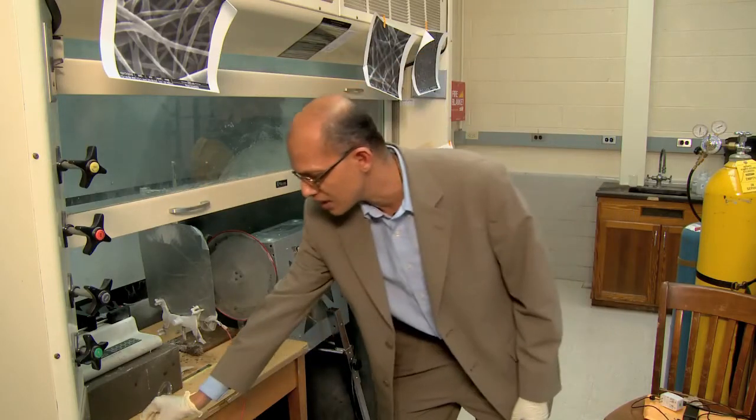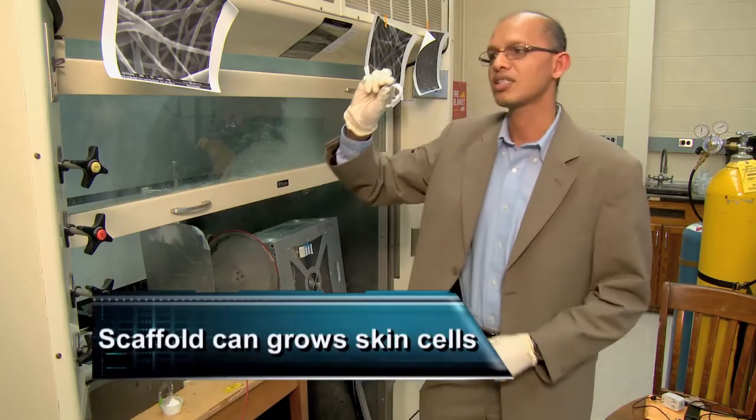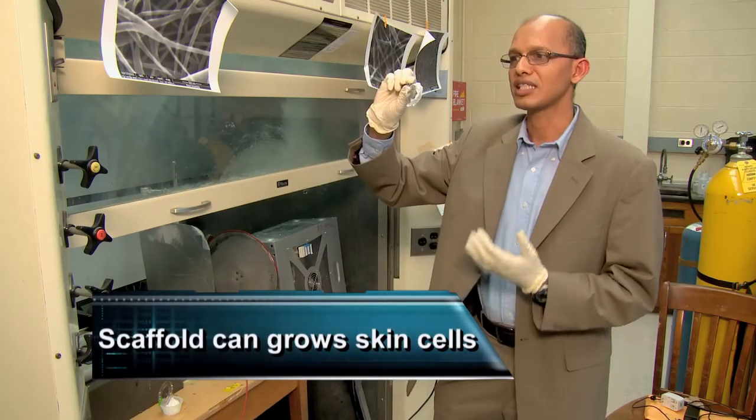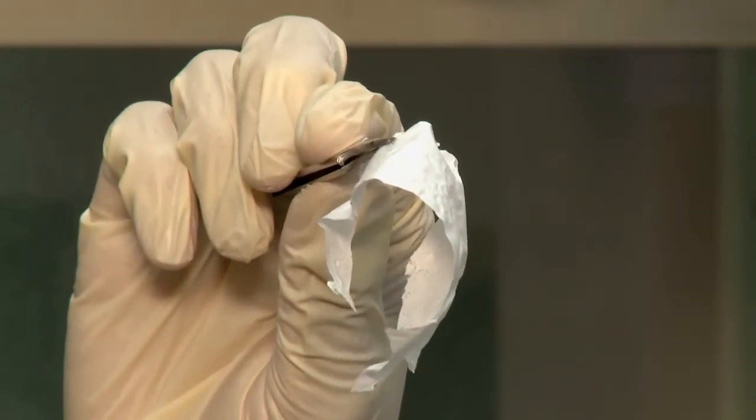Using these we make materials such as scaffolds that you can see here. This is the scaffold on which we can grow skin or in other words cells and tissues. For example, if you want to grow heart cells, these materials will be one type.